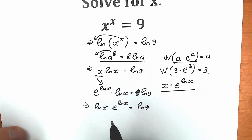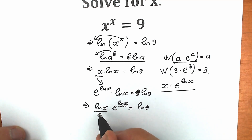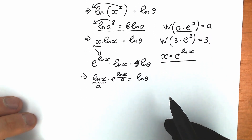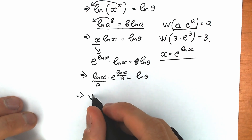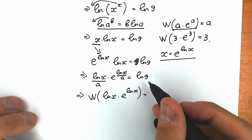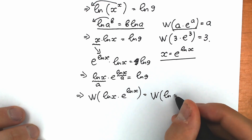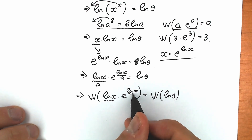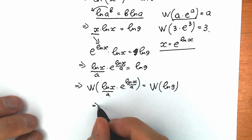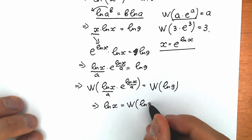Let's do this now. On the left side, we apply Lambert W function to natural log x times e to the power natural log x, equal to Lambert W function of natural log 9 on the right side. Since we have the same expression in both positions, Lambert W gives us only our a, which in our case equals natural log x. So on the left side we have natural log x, and on the right side we have W of natural log 9.